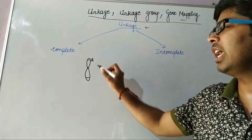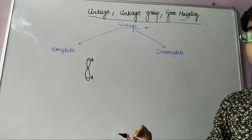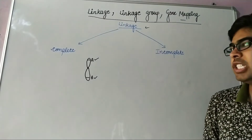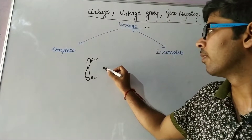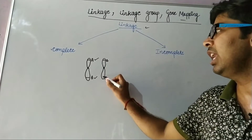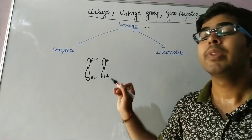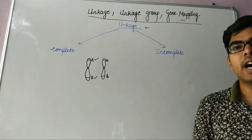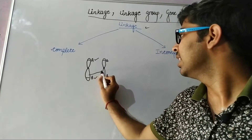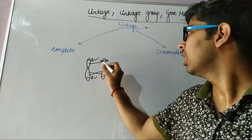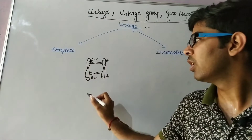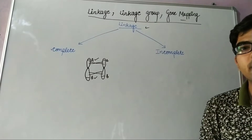Consider two genes A and B found on the chromosome at a very far apart position. This is the homologue of this chromosome having small a allele and small b allele. In this case, there are found high chances of recombination frequency during meiosis. The recombination can occur at multiple positions, which leads to chances of separation of A and B genes.